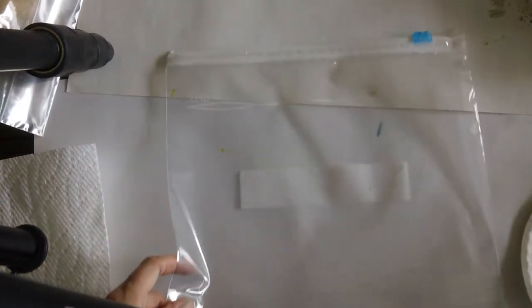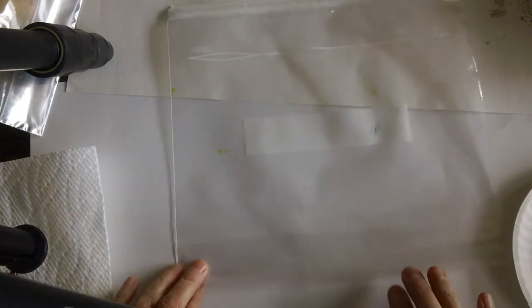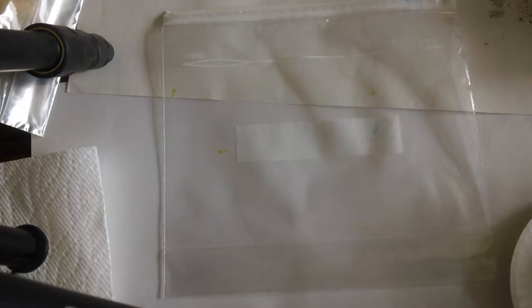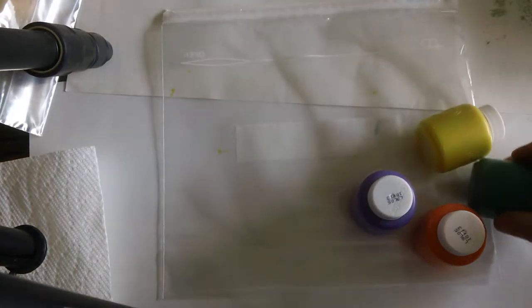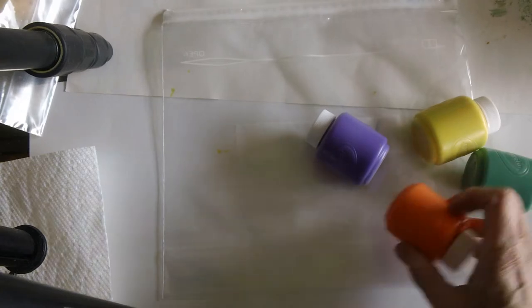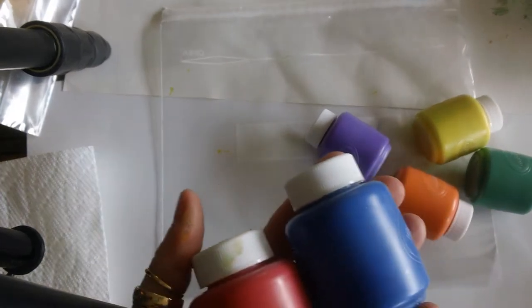We are going to continue with printmaking. Yesterday we printed with potatoes. Today we're going to print using this baggie. I did go to Wegmans and they did have tempera paint. You might have that already at home, or someone can maybe venture out and get some for you at Michael's or Wegmans.